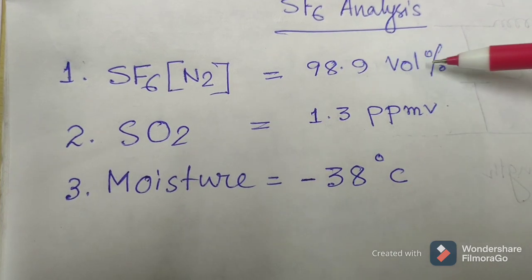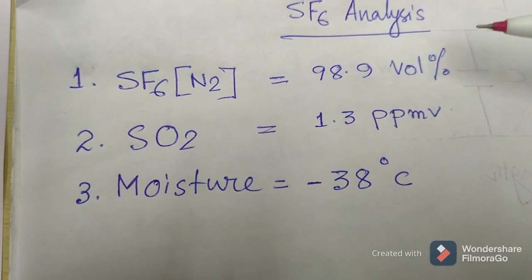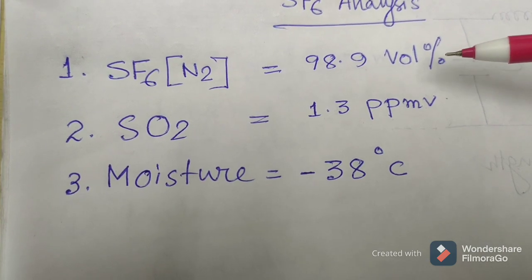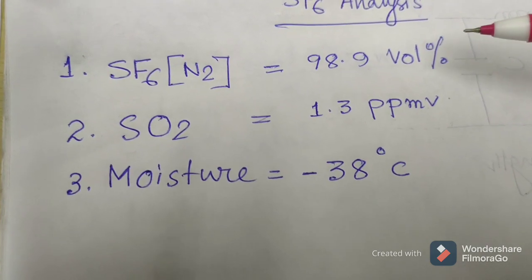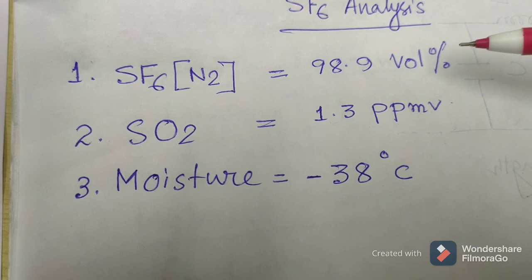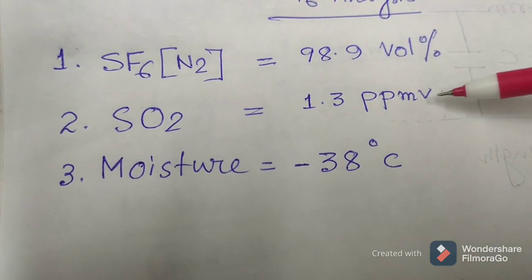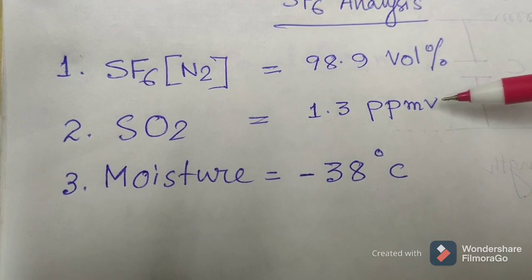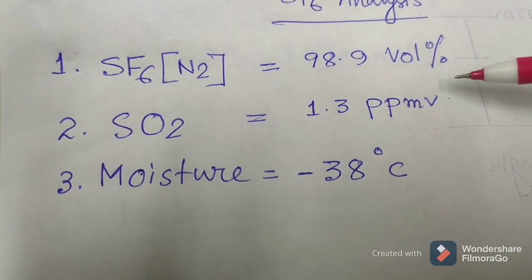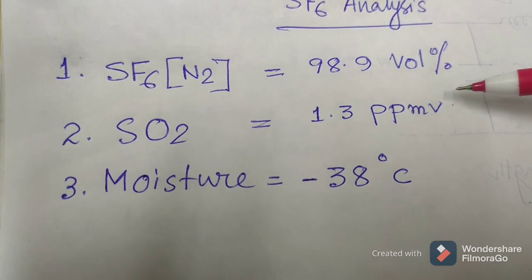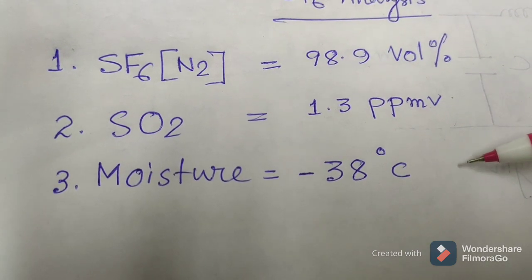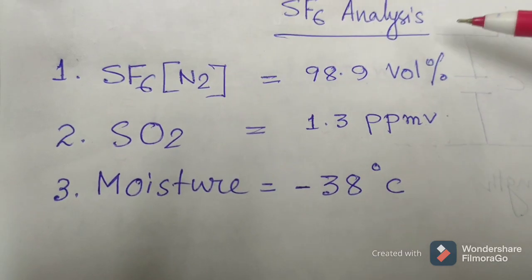We have to analyze the SF6 quantity present after lots of arc quenching or arcing inside the interrupters, how much SO2 sulfur dioxide gas has been generated inside the interrupter cases, and also the moisture inside the interrupter.